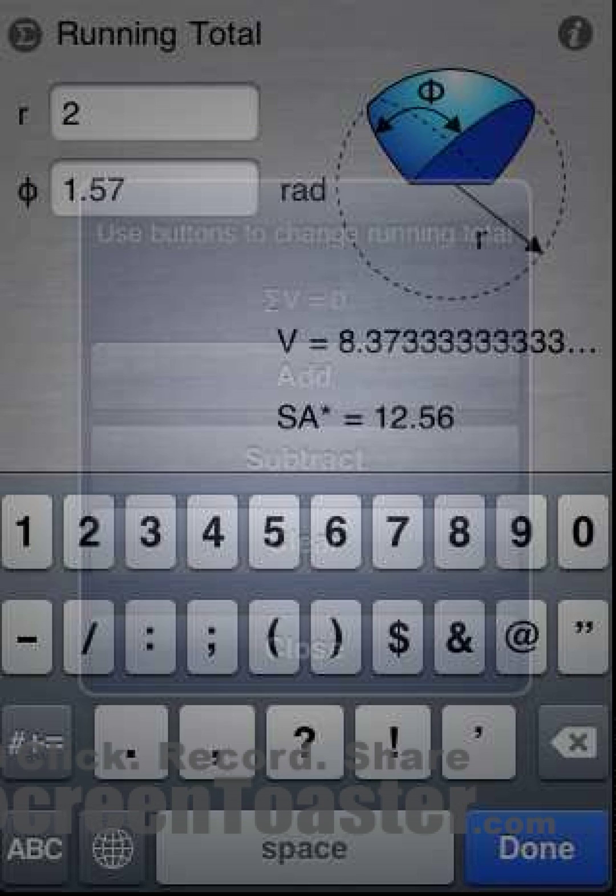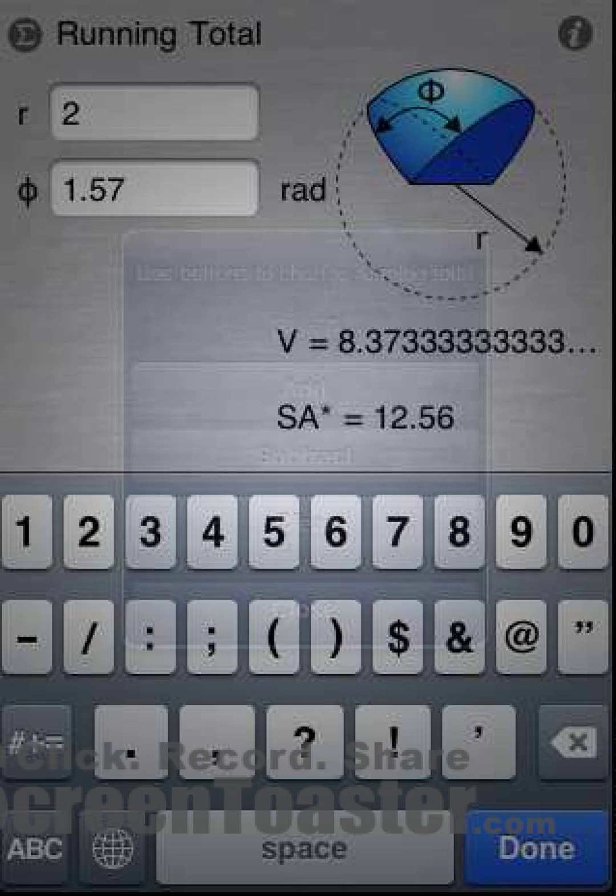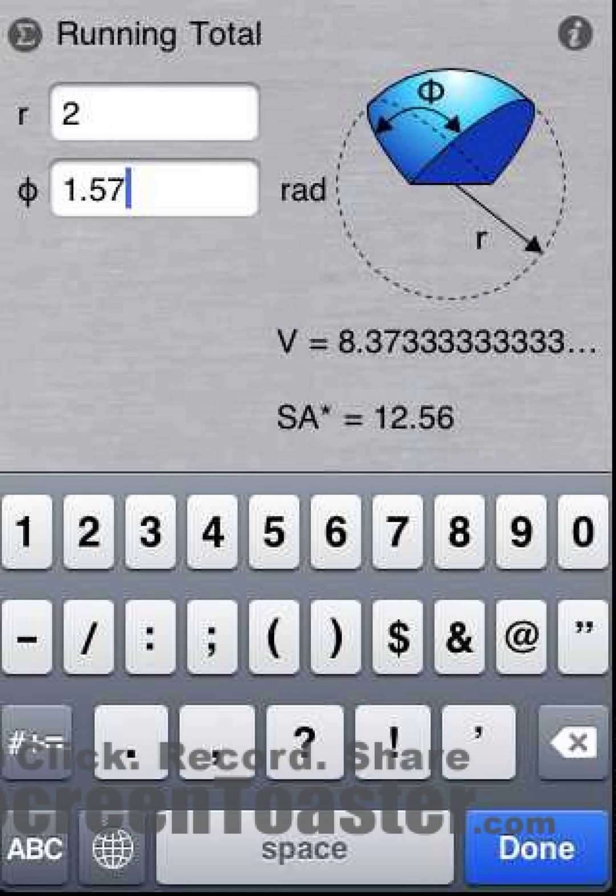To subtract the volume from the total, press subtract. To clear the running total, press clear. To exit, press close.